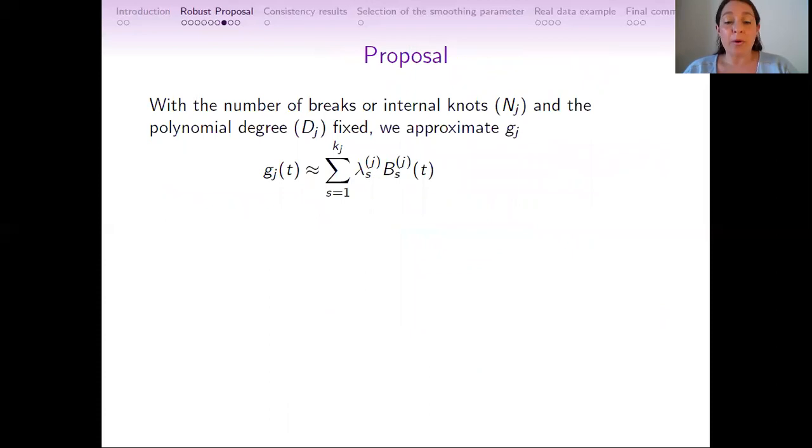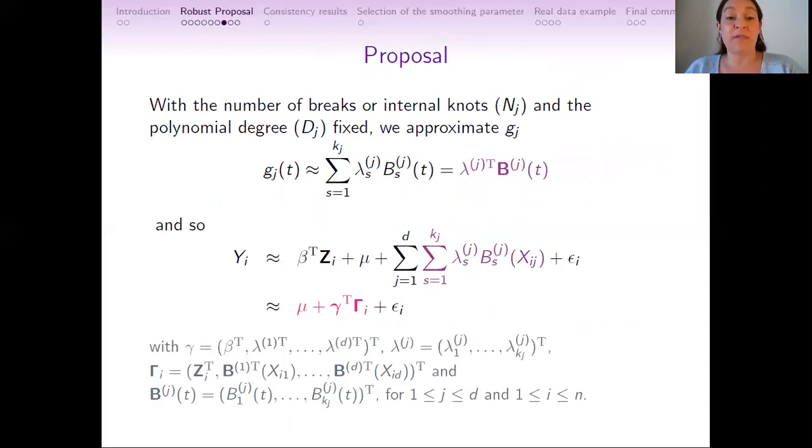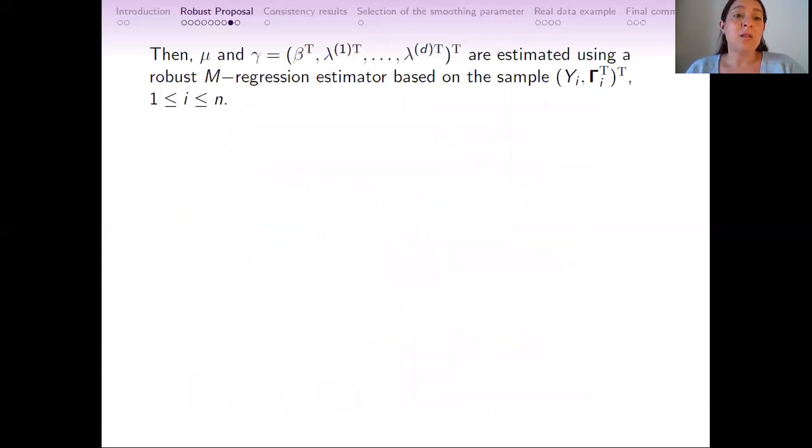So our proposal consists of, with the number of terms in the sum fixed, approximating g_j by a linear combination of B-splines. By doing this, now the response variable Y_i can be approximated by a linear regression model with covariates Γ_i. Then the objects to be estimated are the constant μ and the lowercase γ, which is a vector.